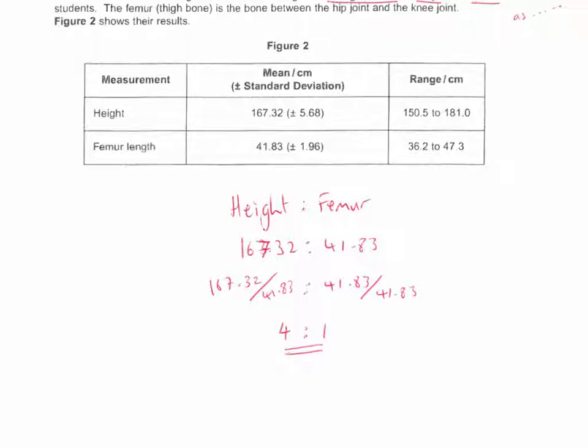We do sometimes get questions: what's the difference between standard deviation and range? Range is simply the lowest to highest number. So the smallest height in this sample is 150.5, and the tallest girl in this sample is 181 centimeters. Standard deviation shows the spread around the mean, so there's a spread of data around the mean. This shows how distributed the data is.